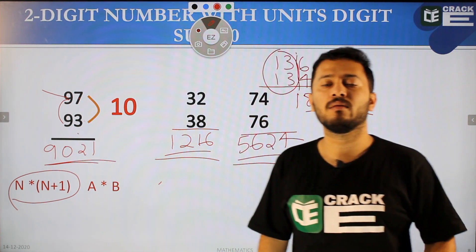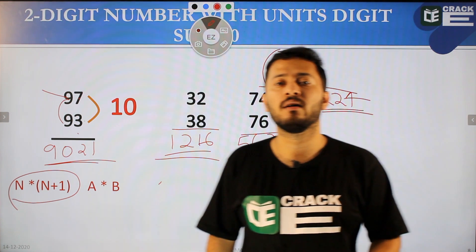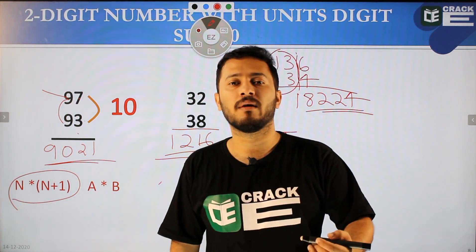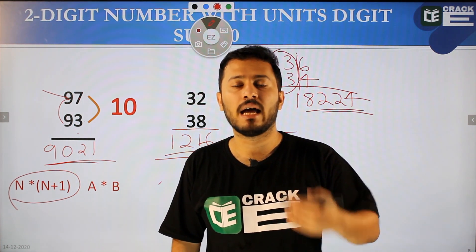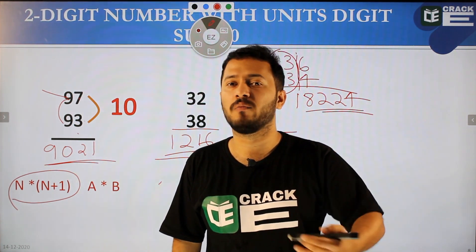So we have covered three Vedic Mathematics techniques: multiplication by 5, multiplication by 11, and the special case of multiplication of 2-digit numbers with the same tens digit and units digits summing to 10. Thank you.